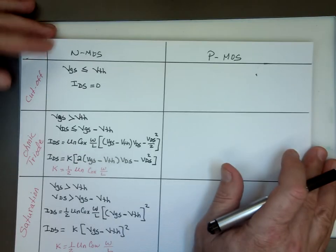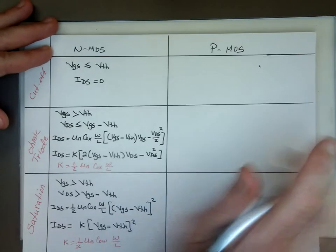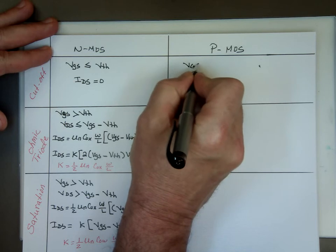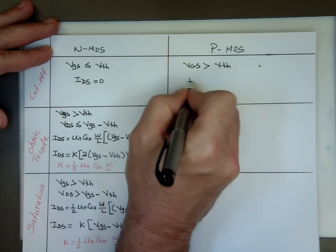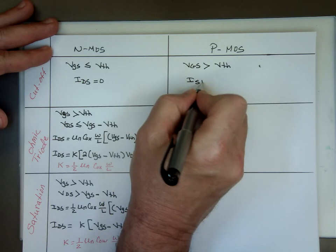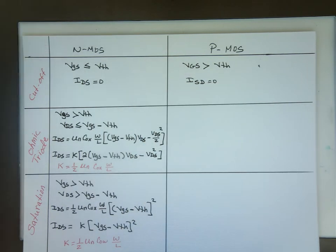Now if you have a PMOS, a little bit of reverse there. You want to make sure your VGS here is greater than V threshold. And again, I said SD here, not DS, will be zero. Because when you're in the PMOS, the D and the S are backward.